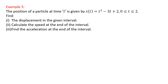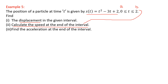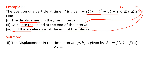Example 5: the position of a particle at time t is given by s(t) on the interval 0 ≤ t ≤ 2, so a = 0 and b = 2. Find: (1) the displacement over the interval, (2) the speed at the end of the interval (t = 2), and (3) the acceleration at the end of the interval. Displacement = f(2) − f(0). Substituting gives ΔS = −2.